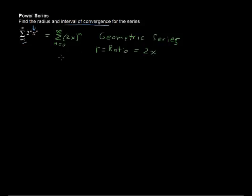The test for convergence for a geometric series is this: if the absolute value of r is less than 1, then it converges. So what we're going to do on this one is say, if r is between negative 1 and 1 then it converges, and our r is 2x.